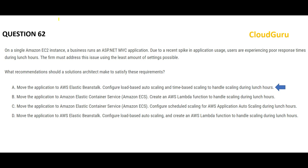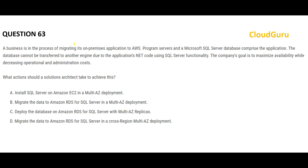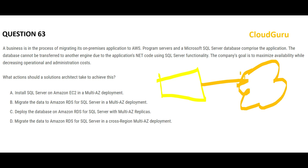Please pause the video and read the next question carefully. There is already an on-premises application and you want to migrate it to AWS. There are two components: the application and a SQL Server database. The question clearly mentions you cannot use another engine because the application is compatible with SQL Server functionality only. Importantly, all four options suggest only SQL Server, so the database engine restriction alone cannot help identify the right answer.